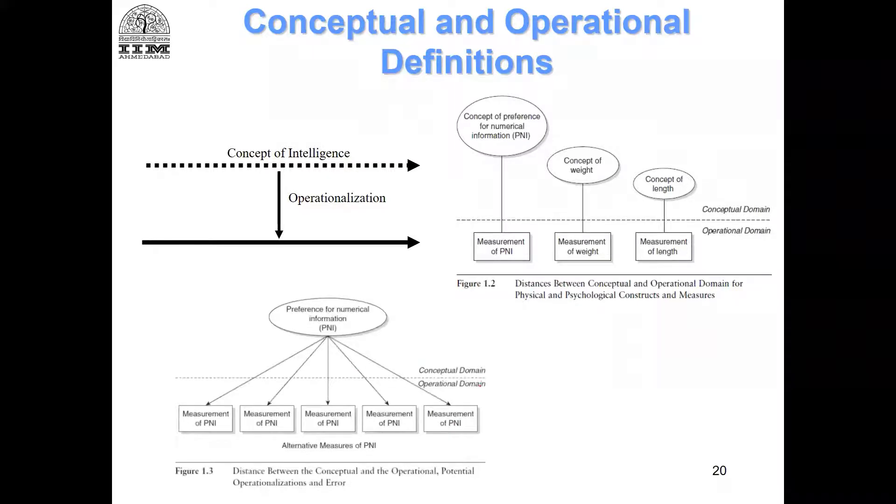And the second thing that we are talking about here is for one latent construct, because we don't know what the true latent construct is, you can have multiple measures. Right? You can have measurement one, measurement two, measurement three, and these are all alternate measures of preference for numerical information.